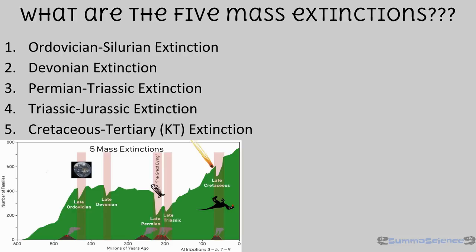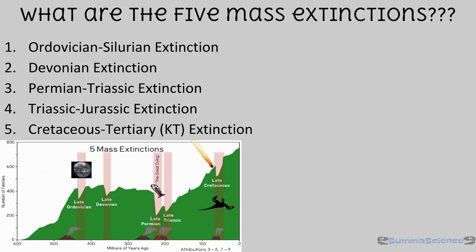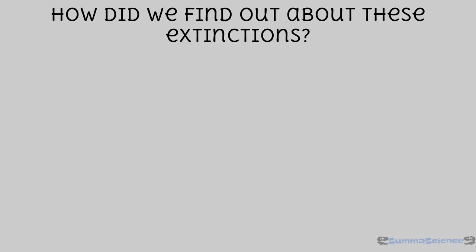Not too long after the Permian extinction came the Triassic-Jurassic extinction. This extinction is thought to have been caused by an extreme amount of carbon dioxide in the atmosphere released as Pangaea continued to split apart. The carbon dioxide again increased the temperature of the earth's surface and set about a chain of events which created this extinction. The last and most recent extinction we'll examine is the KT extinction, which occurred roughly 65 million years ago and is best known for the end of the age of the dinosaurs.